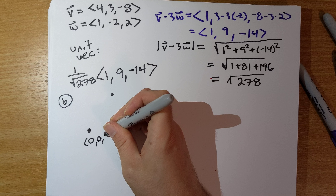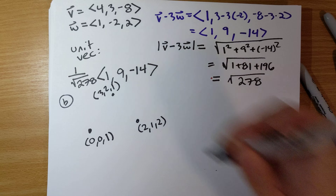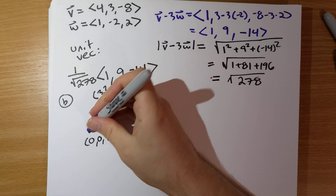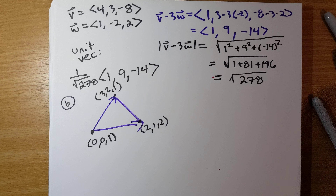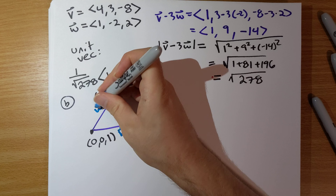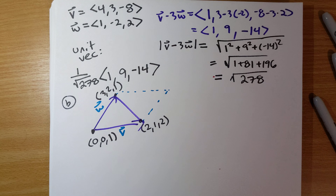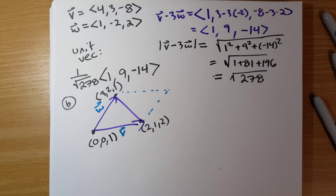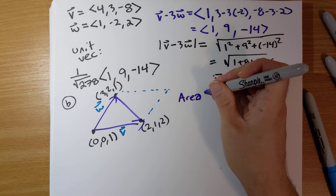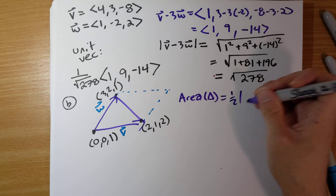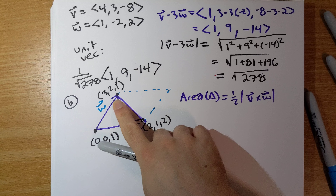Our three points are (0, 0, 1), (2, 1, 2), and (3, 2, 1). We want to find the area of this triangle. We define vector V going from (0, 0, 1) to (2, 1, 2), and vector W going from (0, 0, 1) to (3, 2, 1).